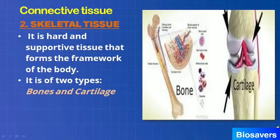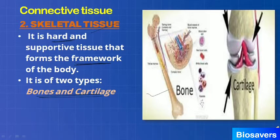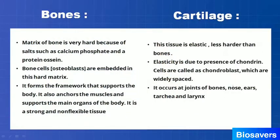The second type of connective tissue is skeletal tissue. Skeletal tissue is a hard connective tissue, meaning it makes a proper support framework for the body. It is of two main types: bone and cartilage.